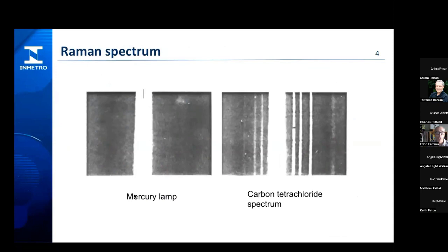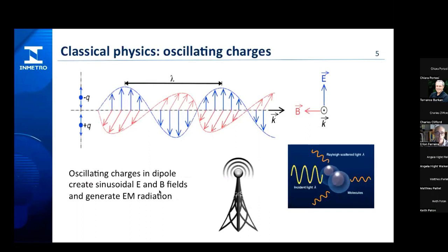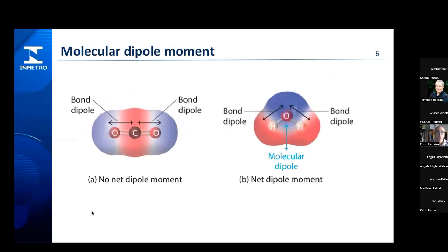In Raman's experiment, he observed solar lines from a mercury lamp, but when a vial of carbon tetrachloride was placed in front, additional lines appeared — light with different wavelengths representing different energies from the incident light. The origin of this new radiation: we can describe light using classical physics. When two opposing charges forming a dipole oscillate, they produce oscillating electric and magnetic fields that propagate in space — electromagnetic radiation. Visible light is the part of the electromagnetic spectrum between 400 and 700 nanometers. Bonds of atoms and molecules can also be depicted as dipoles, as charge distribution tends to be non-homogeneous along the bond.